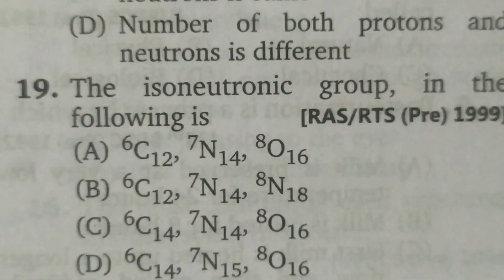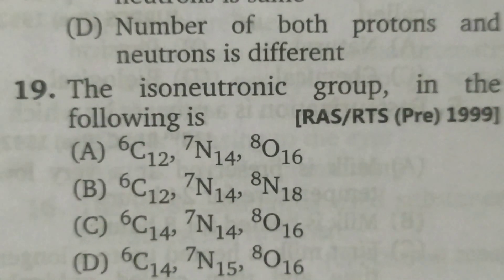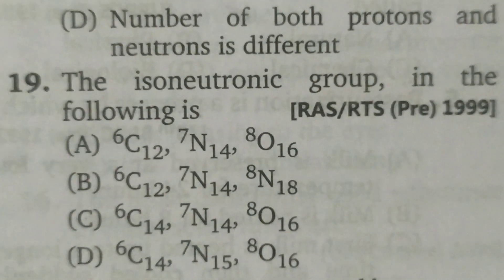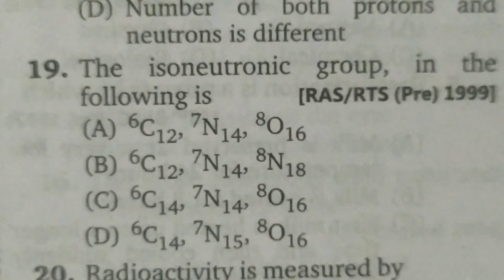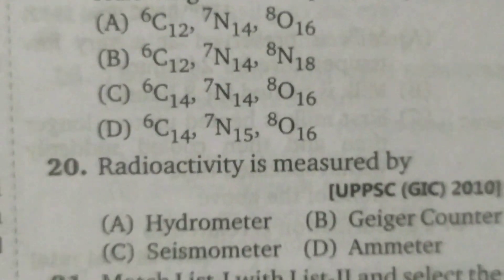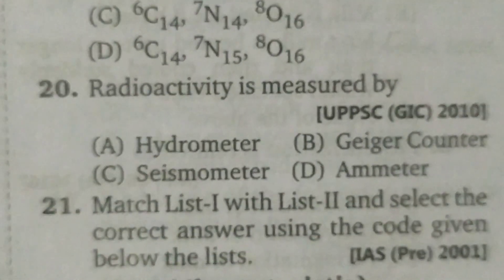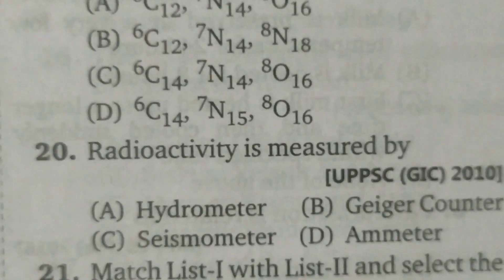The isoneutronic group in the following is option D. Radioactivity is measured by Geiger counter.